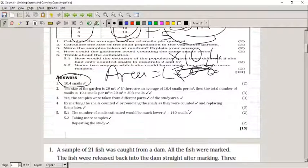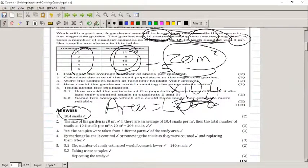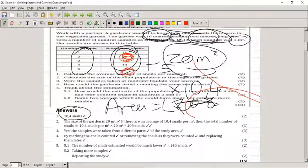Now, 5.1 asks how would the estimate of the population have been different if he had only counted snails in quadrat 2 and 5? If we take a look at quadrat 2, it had 8, and 5 had 6. It would have been quite different - you would have only about 140 snails, so the estimate would have been very low. Name two ways in which you could have made the estimate more reliable: you can increase your sample size or repeat the study.